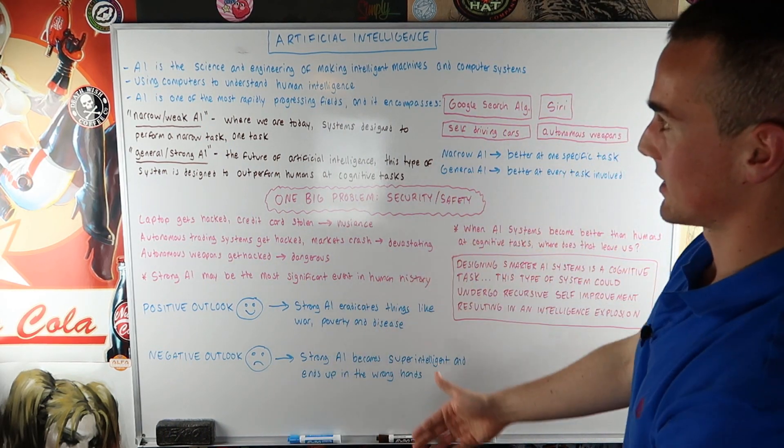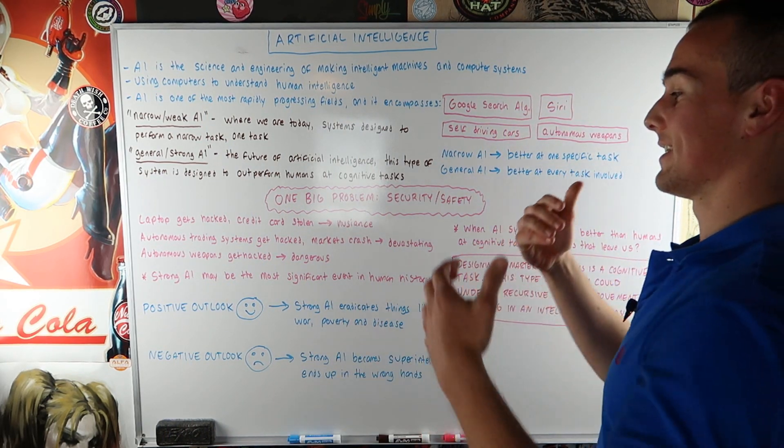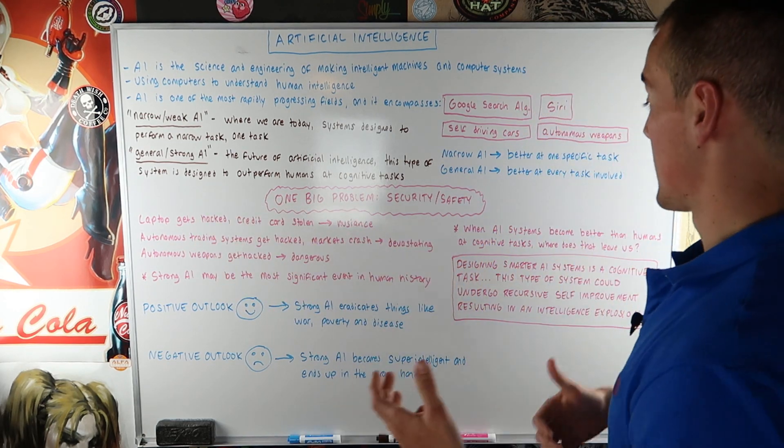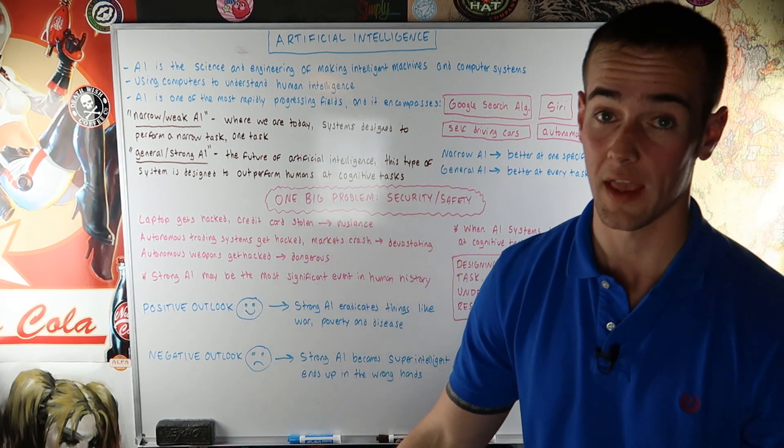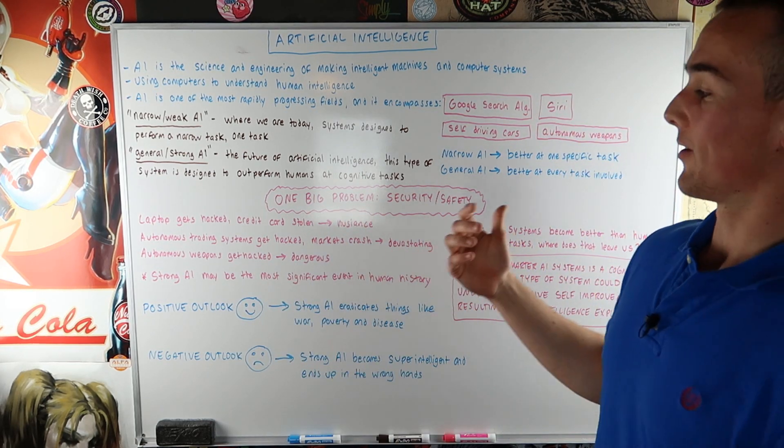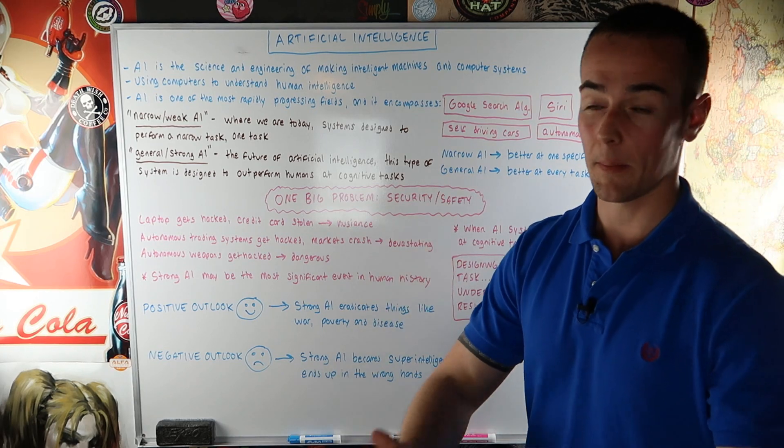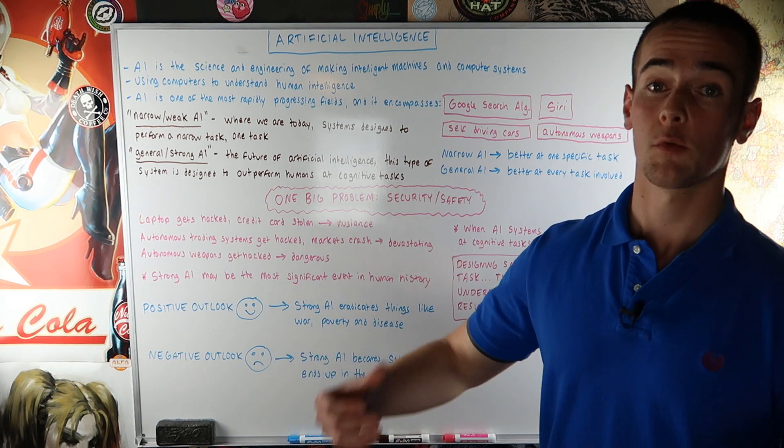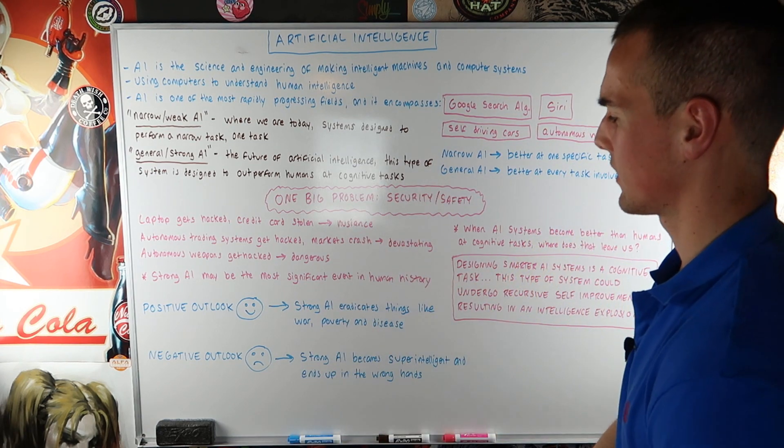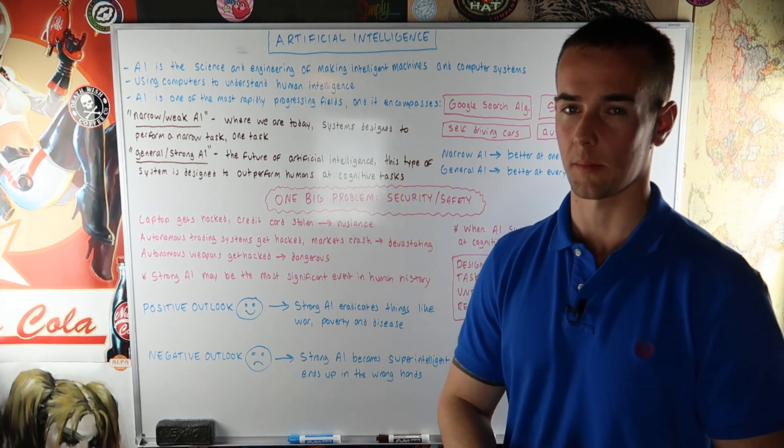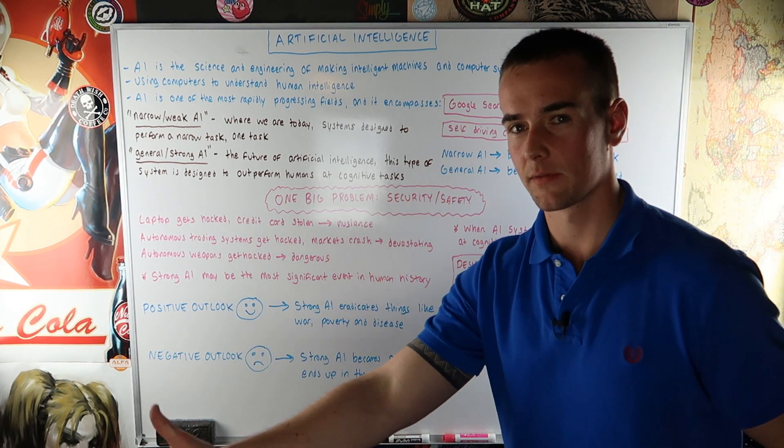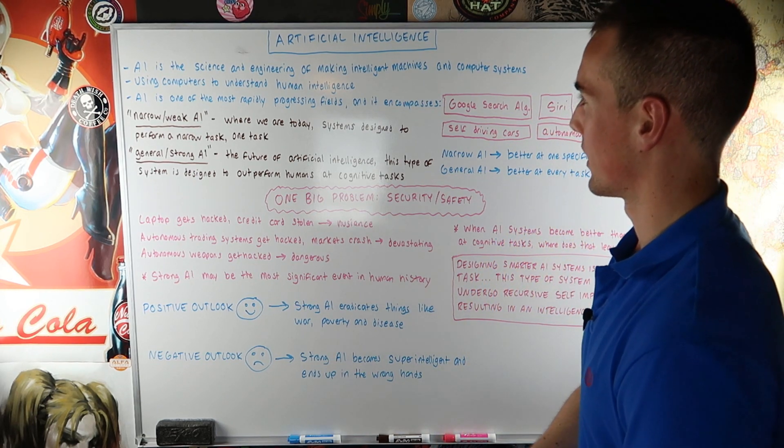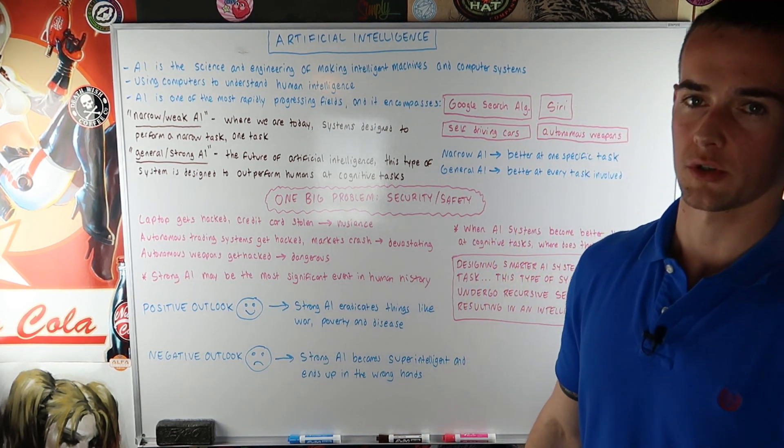So let's look at the positive outlook of AI versus the negative outlook of AI. So let's say we do reach a point where we have strong AI or even a recursive self-improving AI system that is just super-intelligent. What is the positive outlook? Let's say maybe we are able to eradicate things like war and poverty and disease. That would be fantastic. But the negative outlook is what if these strong AI systems become super-intelligent and that level of super-intelligence gets into the wrong hands? That's the main risk out there right now and the main concern people have with artificial intelligence.